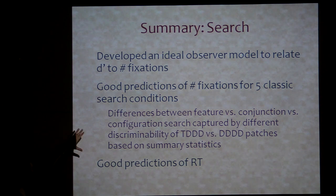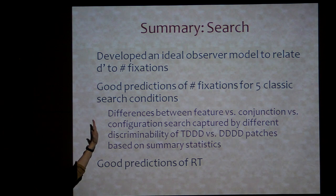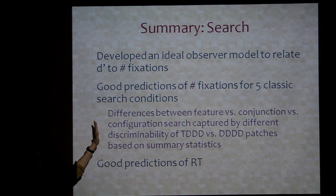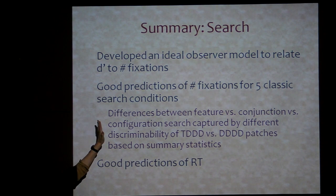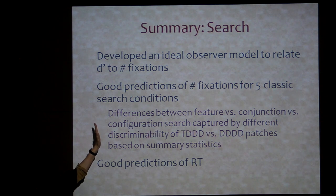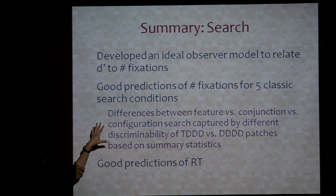The particularly interesting thing is that other than the fact that we have picked this set of summary statistics, there is no part of the model that says oh, this is feature search, so I've got to do something different than conjunction search or configuration search. That's all just encapsulated by the summary statistics. There's no special difference between them.